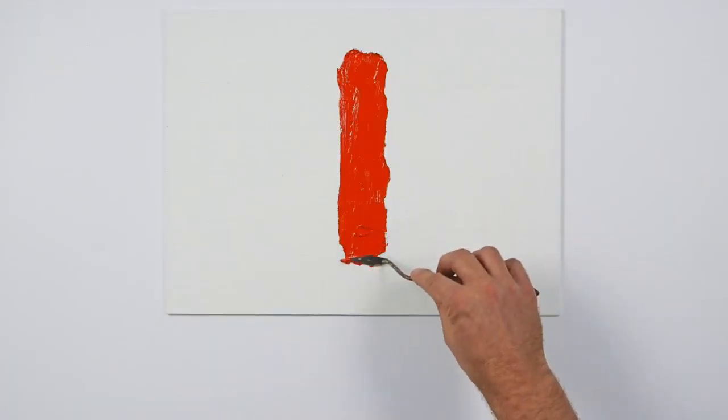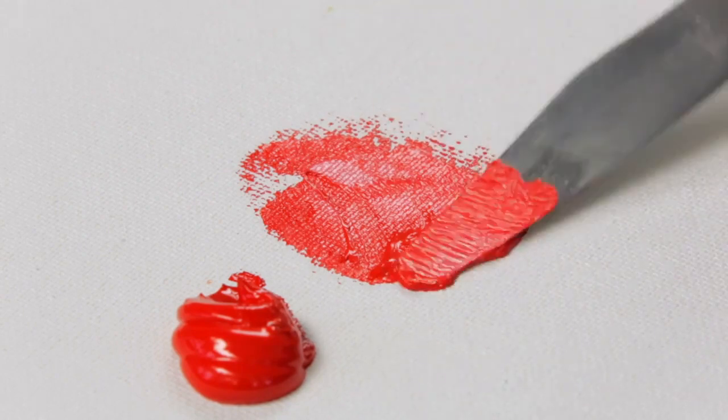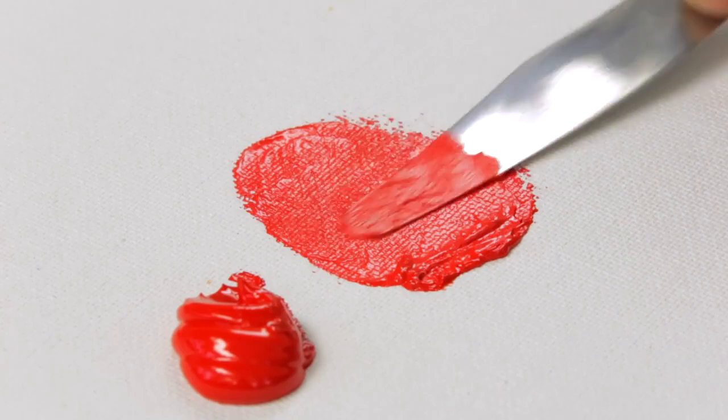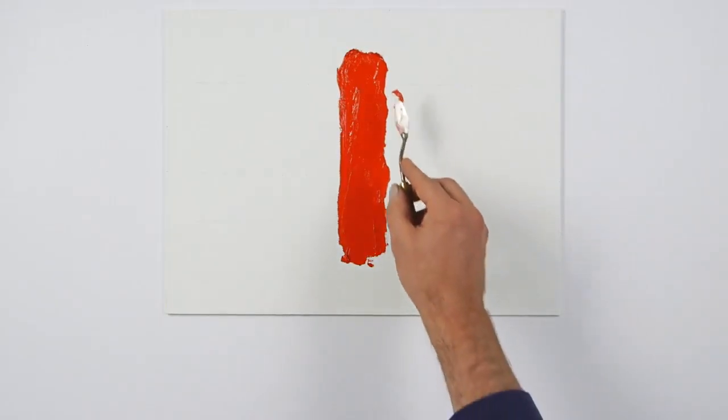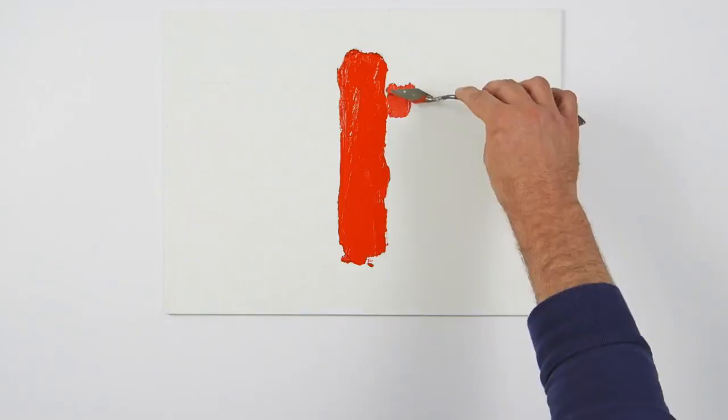This cadmium red is my starting point for exploring hue, value and saturation. I'm going to start by mixing in titanium white to raise the value of the red. I'll make five values, adding more white as I go along. This set of values or tones could also be referred to as tints.